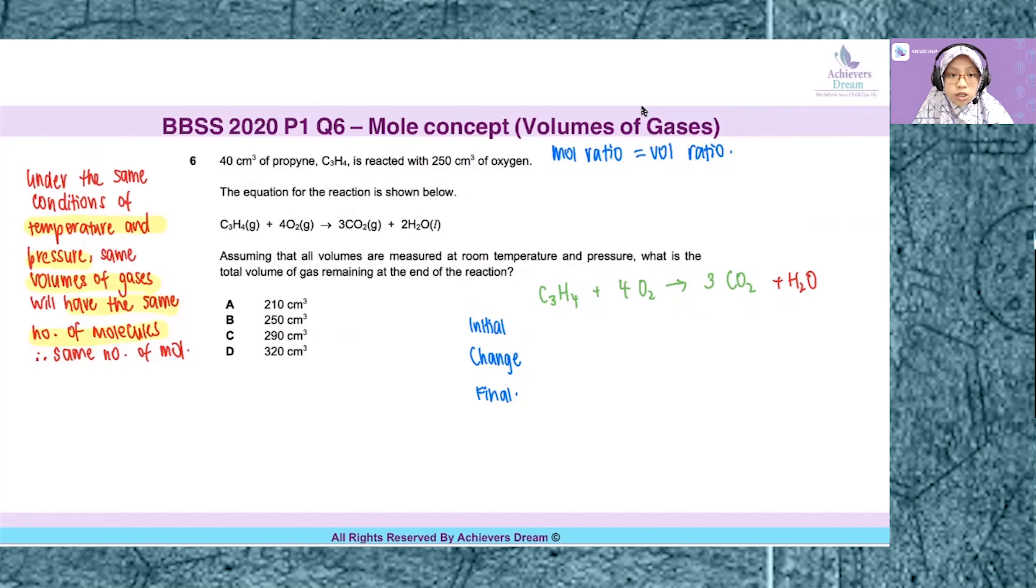written in this question here. Let's take a look at the question. 40 cm³ of propyne C₃H₄ is reacted with 250 cm³ of oxygen. The equation is given below. I've already rewritten the equation with another column to write initial, change, and final. I will show you how to do the calculation of this table later.